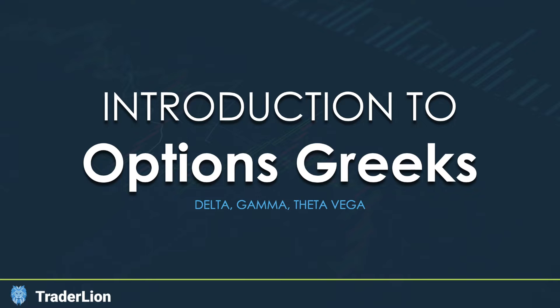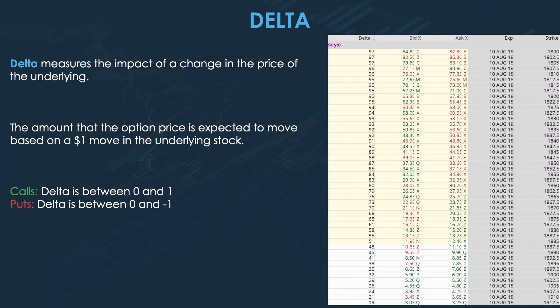Delta measures the impact of a change in the price of the underlying — the amount that the option price is expected to move based on a $1 move in the underlying stock. For calls, your Delta is going to be between 0 and 1, and for puts the Delta is going to be between 0 and negative 1.